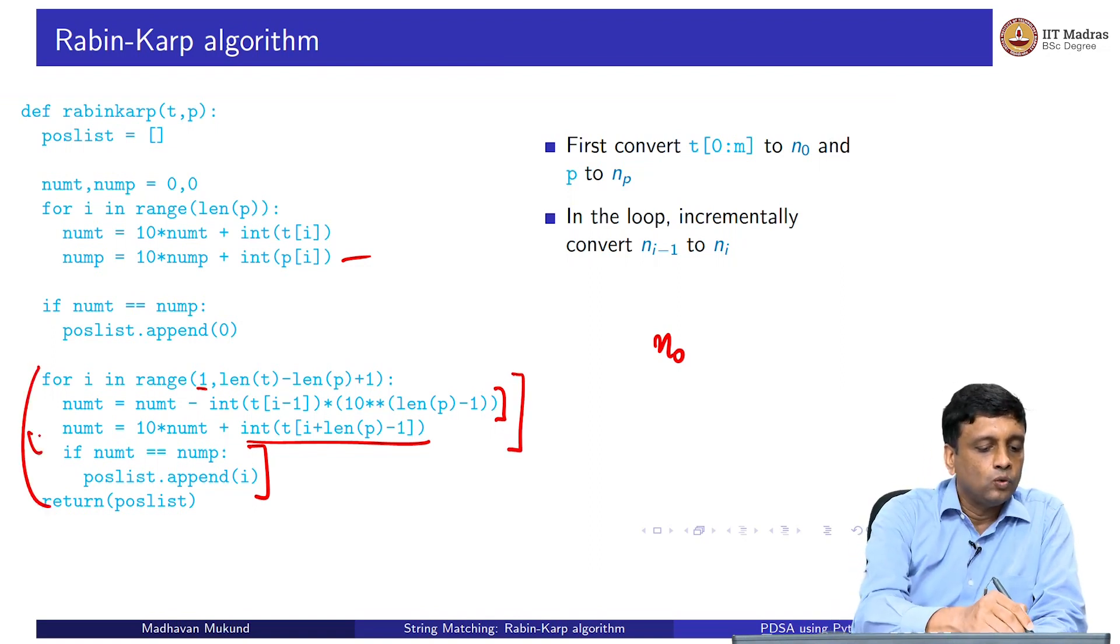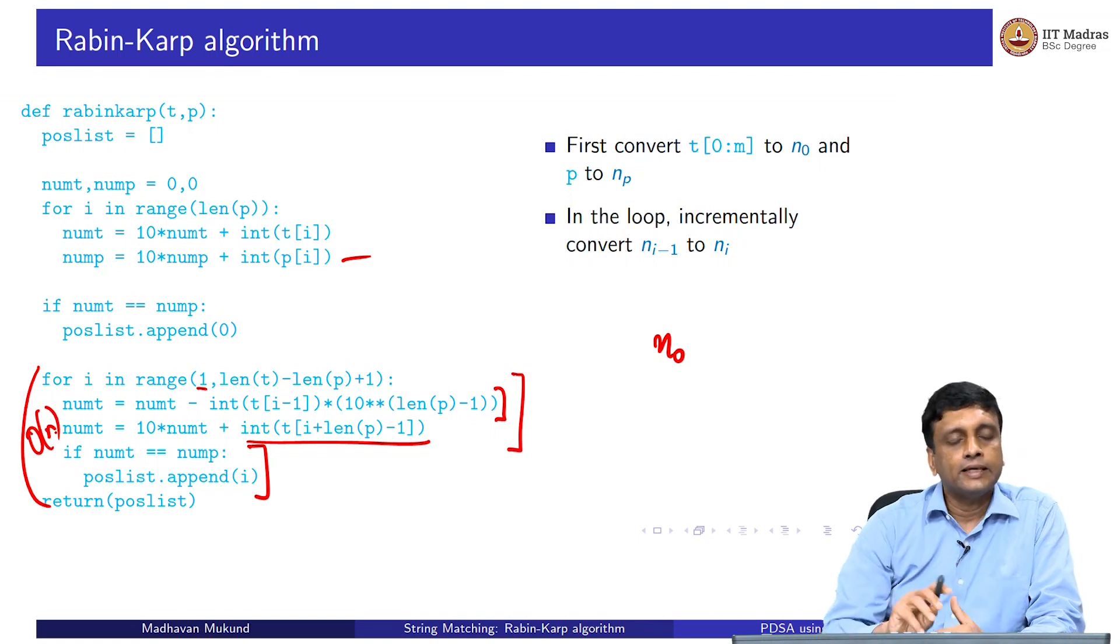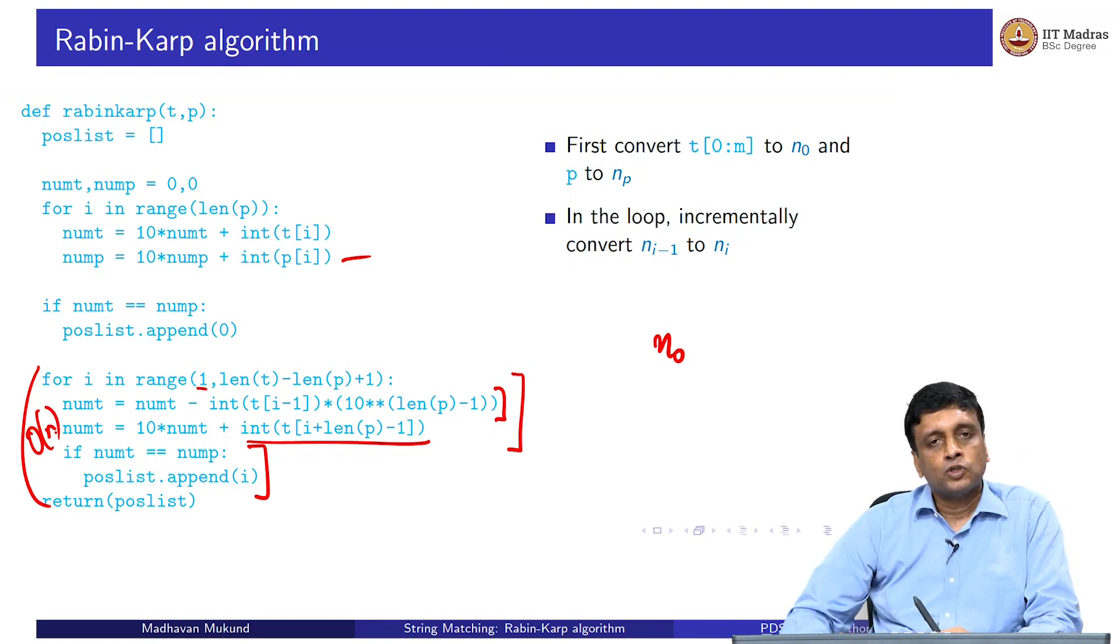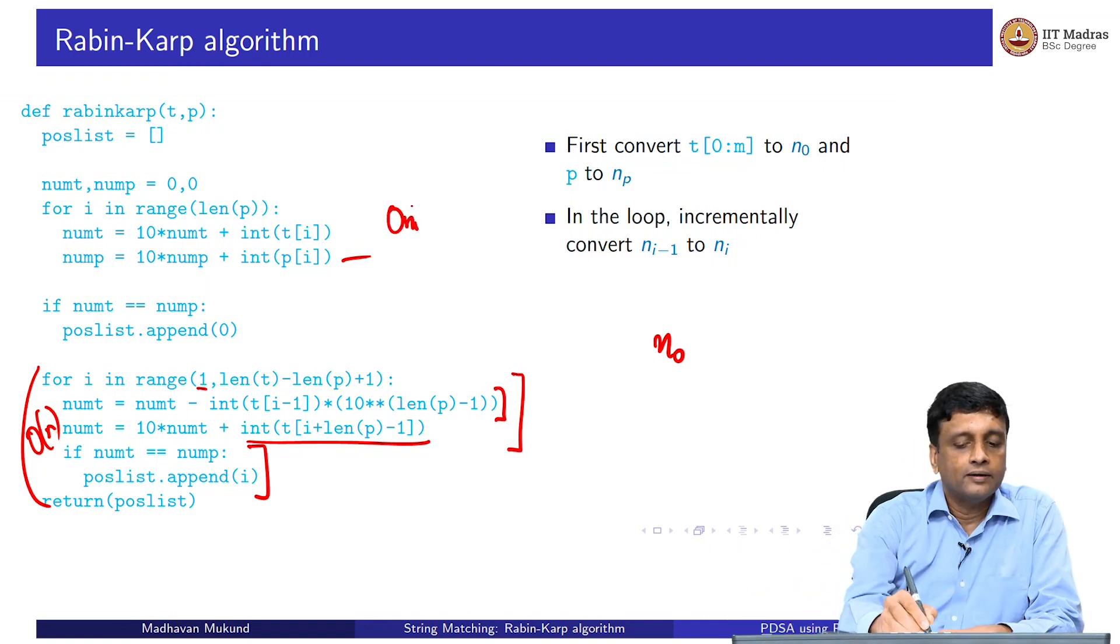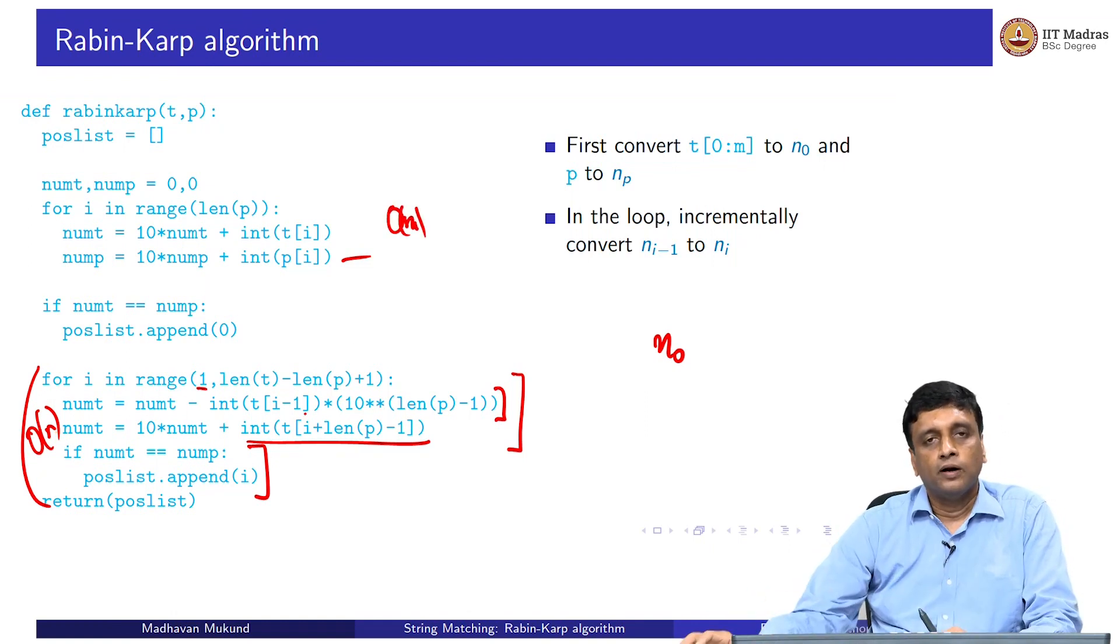This is an order n loop, but it takes only a constant amount of time per iteration. If all goes well, then this will take time order m here and order n in this loop to do the calculation, which is much better than order n times m.